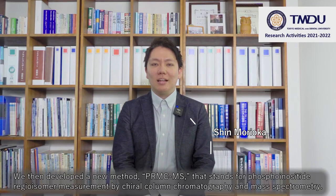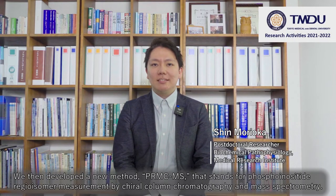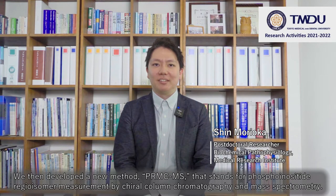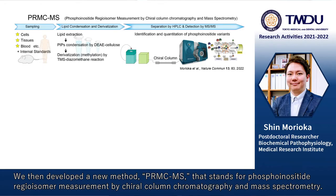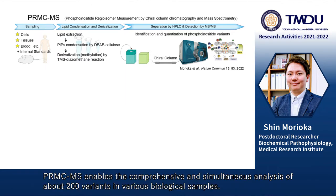We then developed a new method, PALM-SIMS, that stands for phosphoinositide ratio isomer measurement by chiral-column chromatography and mass spectrometry. PALM-SIMS enables the comprehensive and simultaneous analysis of about 200 variants in various biological samples.